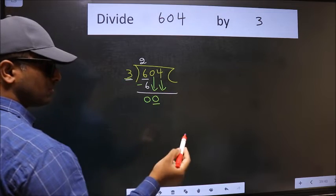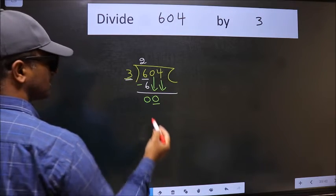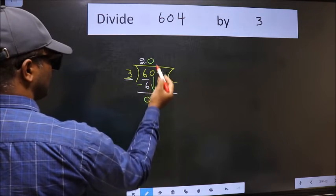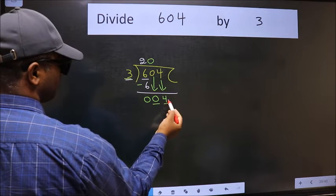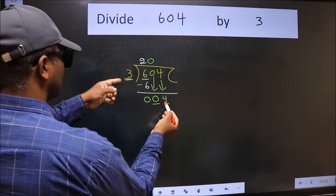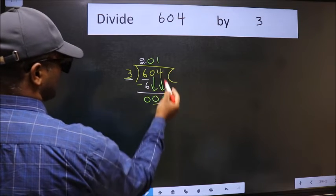And the rule to bring down the second number is we should put 0 here. Then only we can bring down this number. Now 4. A number close to 4 in the 3 table is 3 once, 3.